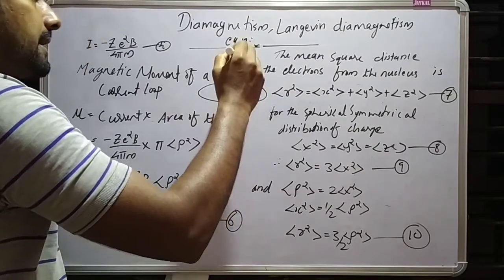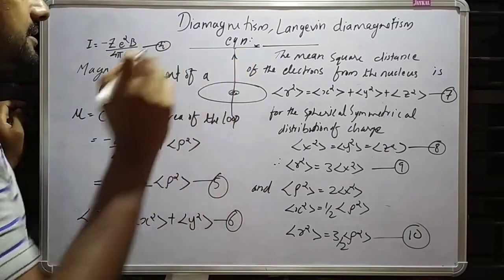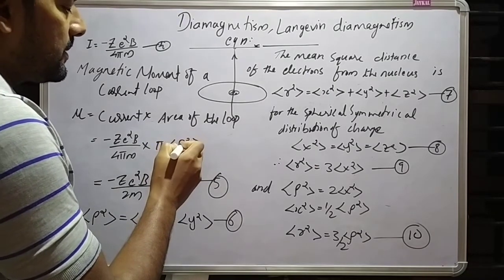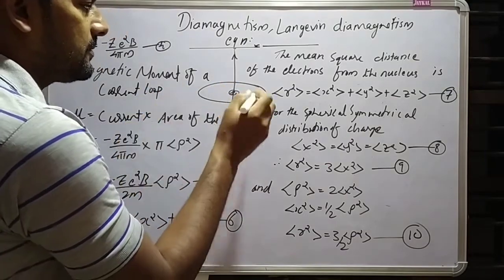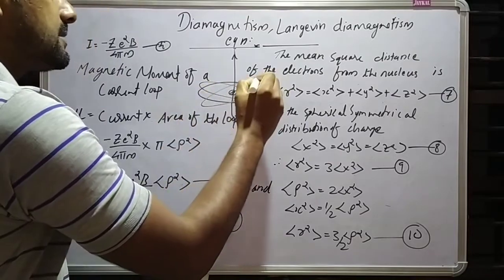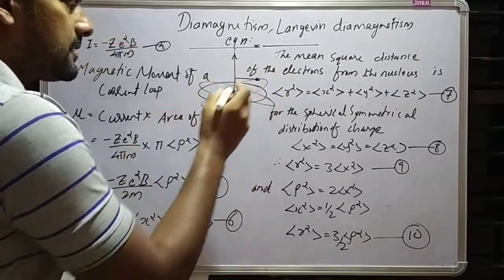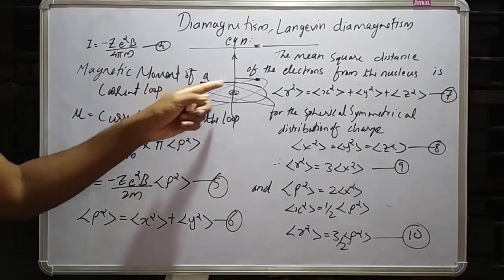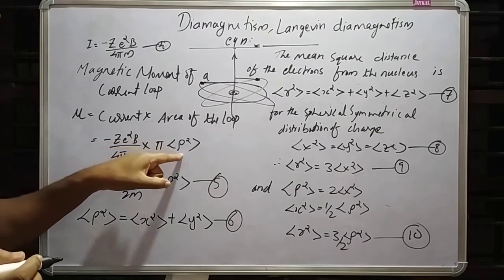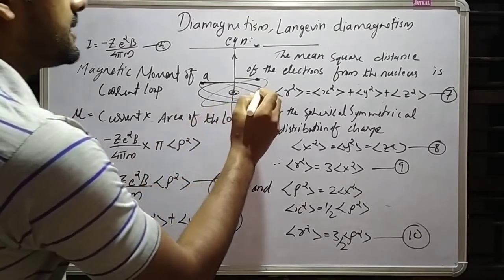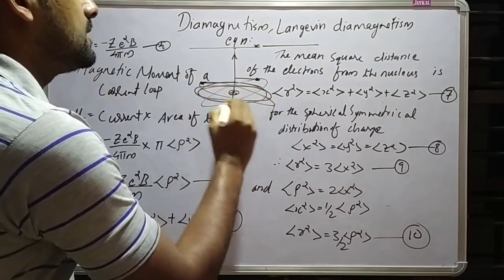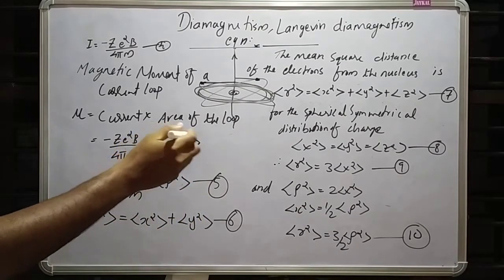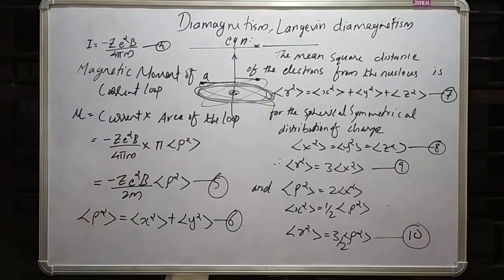If this is the loop, then the magnetic field axis is along this direction. The mean rho squared represents the mean square of the perpendicular distance of electrons from the field axis. If electrons are revolving like this, this is the perpendicular distance of one electron from the field axis, and this is the perpendicular distance of another electron. That average forms the current loop which produces the magnetic field. So the magnetic moment mu equals minus Ze squared B over 2m times rho squared. This is equation 5, with pi cancelling.